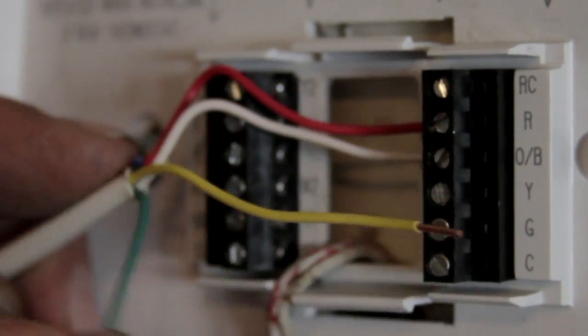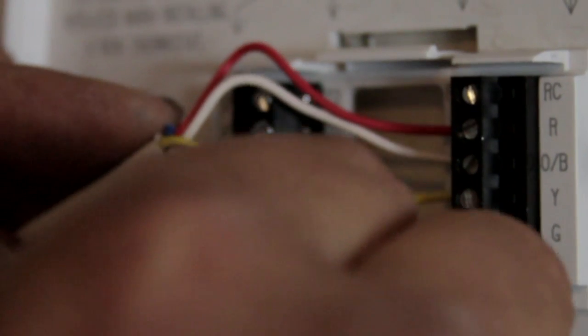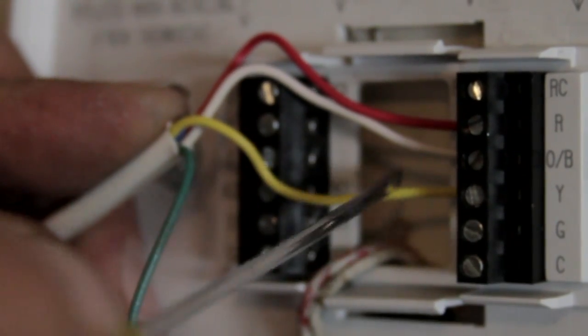When we're using cooling, now a lot of times it looks like it's kind of color coded so that it's yellow. Sometimes this wire can be blue. We're going to plug that in just like that and that's going to be your cooling leg.